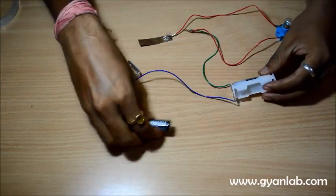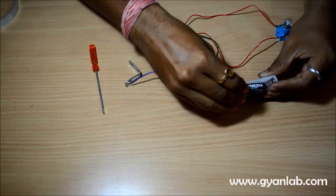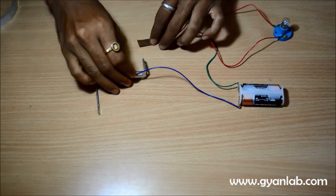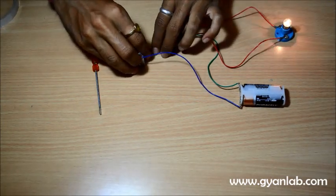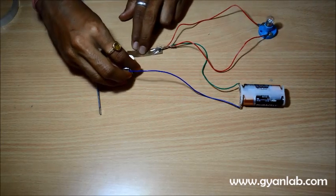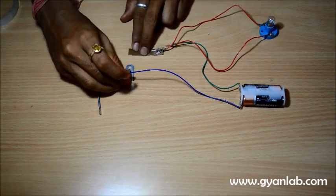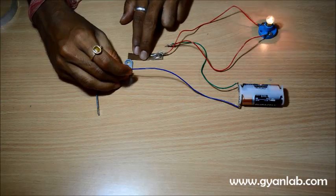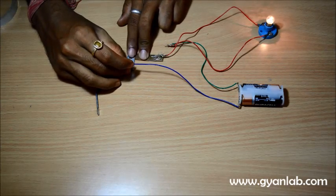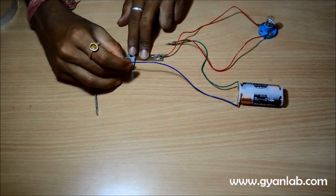I am going to just place in the batteries quickly and when I connect this, see the bulb glows. What is happening is the switch is in the off position right now and the moment I connect these two together, the switch is actually on and it starts working.